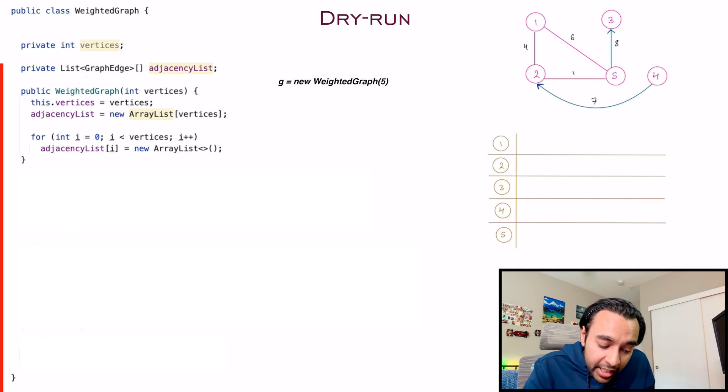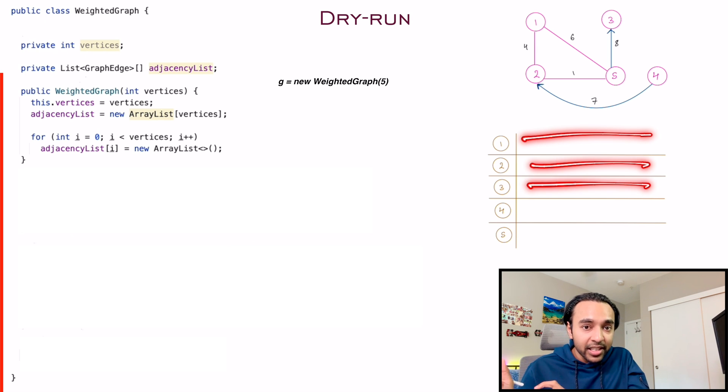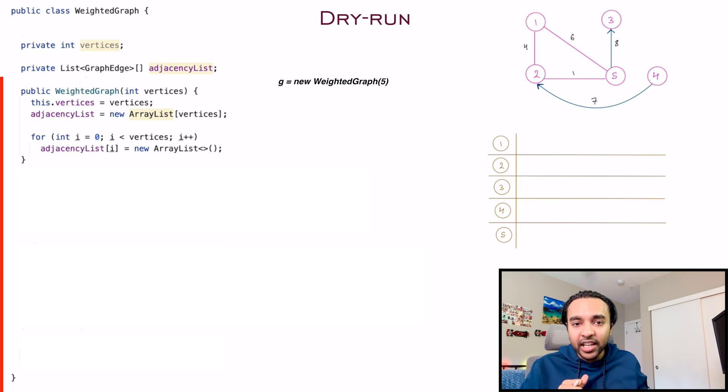Also, for each of these vertices, we run a for loop, and then initialize a new array list which will store all of my graph edges. Notice that the type of this array list is a graph edge that we just created a while ago.